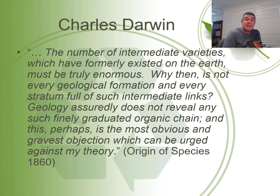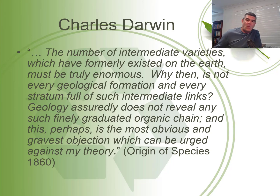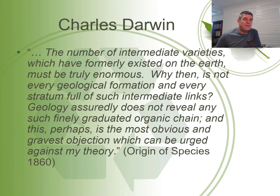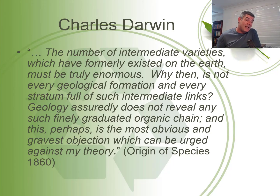In The Origin of Species, Charles Darwin said this: "The number of intermediate varieties which have formerly existed on the earth must be truly enormous. Why then is not every geological formation and every stratum full of such intermediate links? Geology assuredly does not reveal any such finely graduated organic chain, and this perhaps is the most obvious and gravest objection which can be urged against my theory."